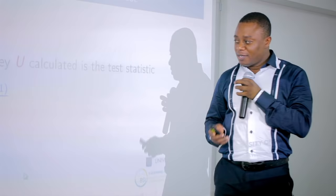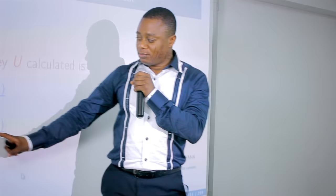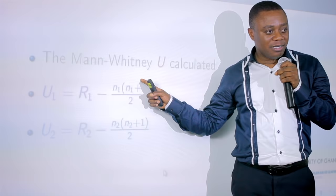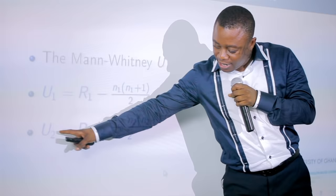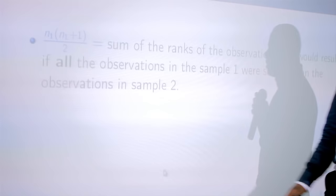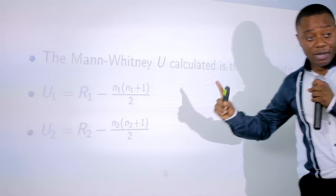For U2, use R2 = 18 and n2 = 5: U2 = 18 − 5(6)/2 = 18 − 15 = 3. So U1 = 22 and U2 = 3. Now find the tabulated value — the critical U statistic.